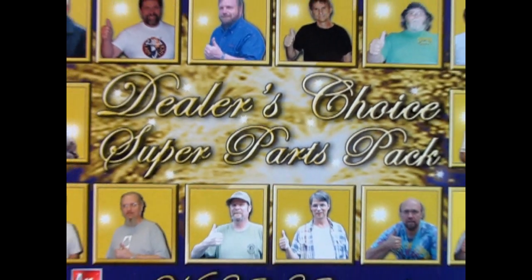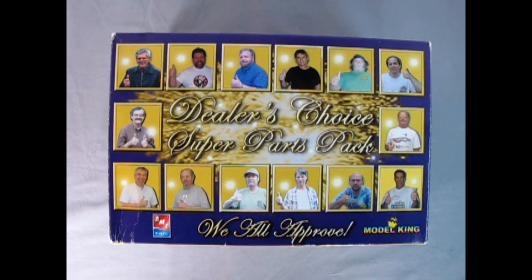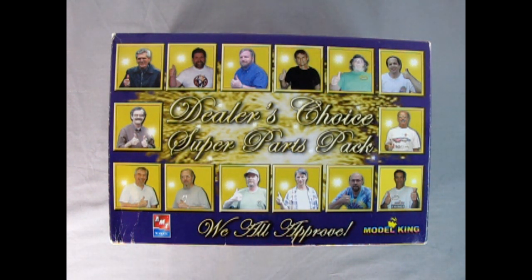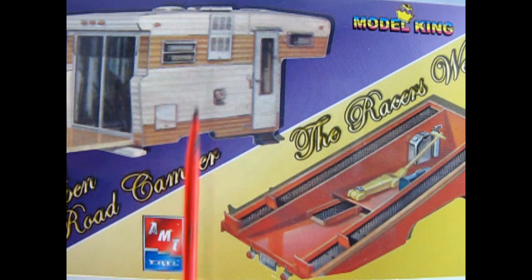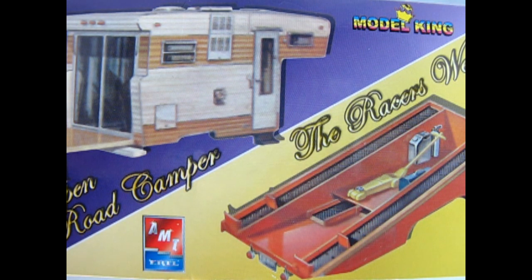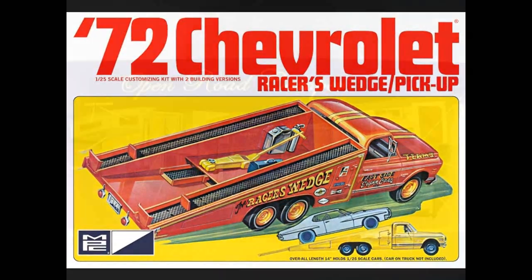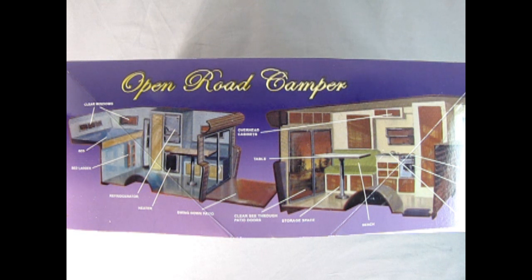So let's go down to the bench and see what's in the box. Today we're taking a bit of a departure in our 1970s model kit tour with this really interesting Model Kings Dealer's Choice Super Parts Pack. According to the end of the box, we actually have the Open Road Camper, which was another great 70s add-on kit, and the Racers Wedge. Recently AMT has released the Racers Wedge, however this model kit from Model King came out by RC2 in 2004.